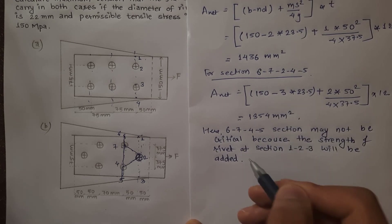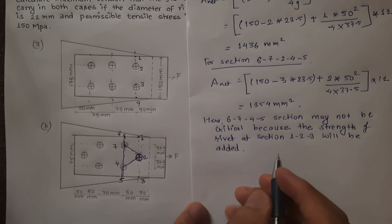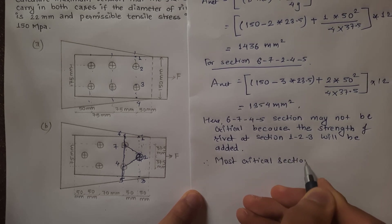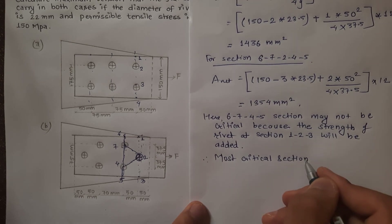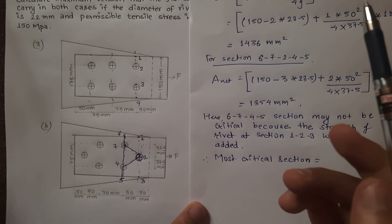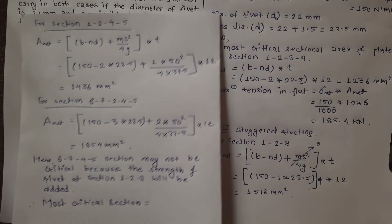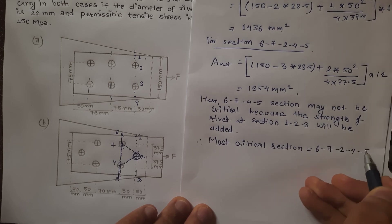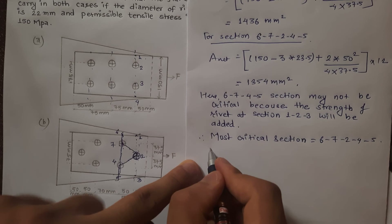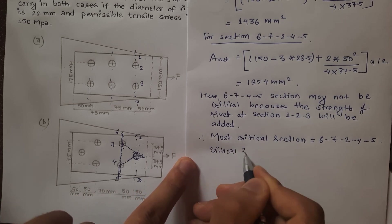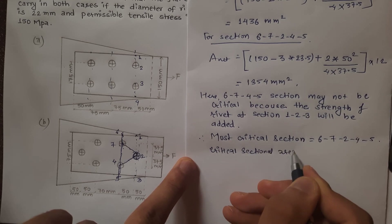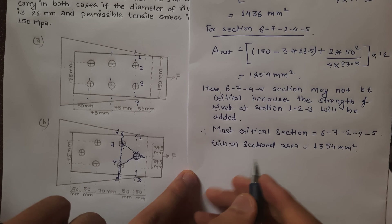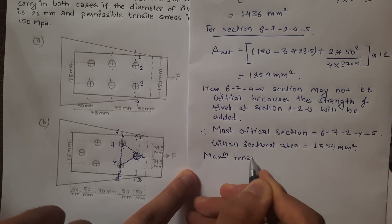The section with the least net area governs. Comparing all sections: section 1-2-3 gives 1518 mm², section 1-2-4-5 gives 1436 mm², and the critical section gives 1354 mm². Therefore the most critical sectional area is 1354 mm².